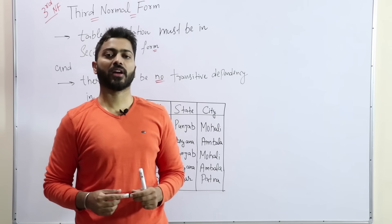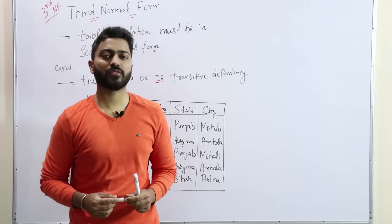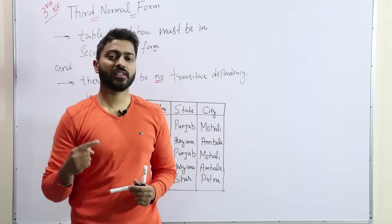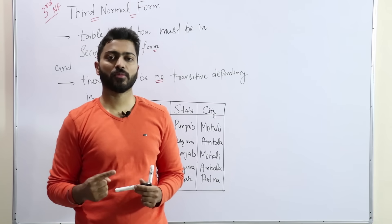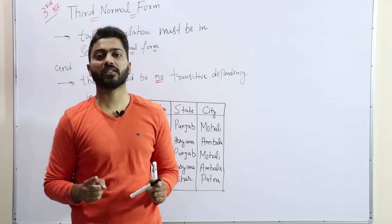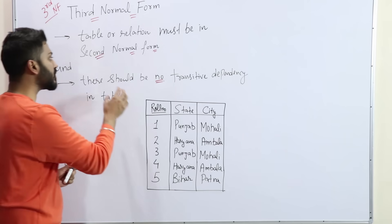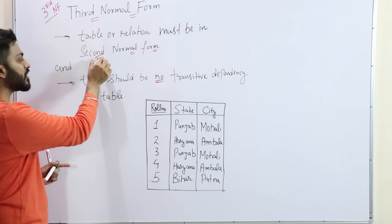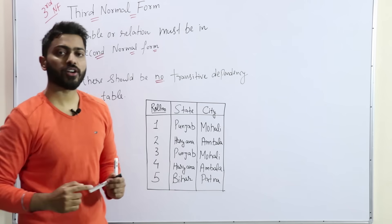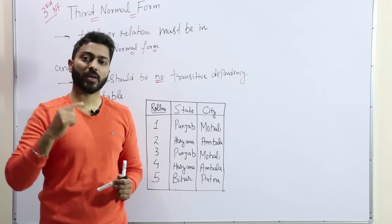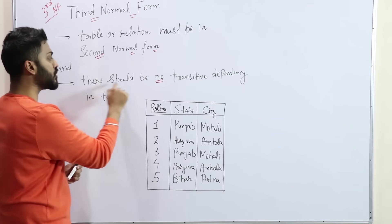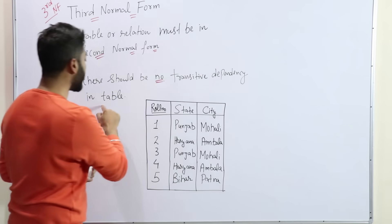Now, the third normal form. According to EF Codd, the rules for third normal form are: first, the table must be in the second normal form, and there should be no transitive dependency in the table. If a relation is in the second normal form, then you have to check the third normal form. Plus, there should be no transitive dependency in the table.